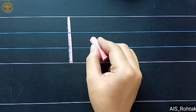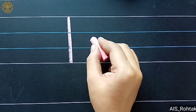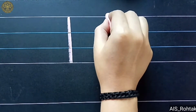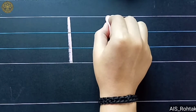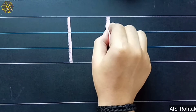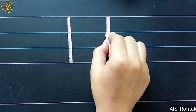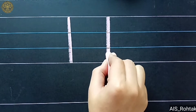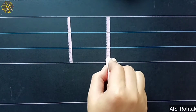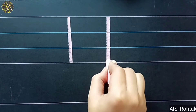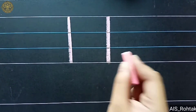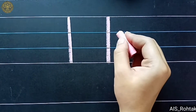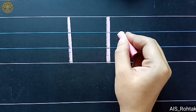Now let's make it again. Start from the red line. Go down, down, down, down, down, down and touch the red line like this. This is standing line.